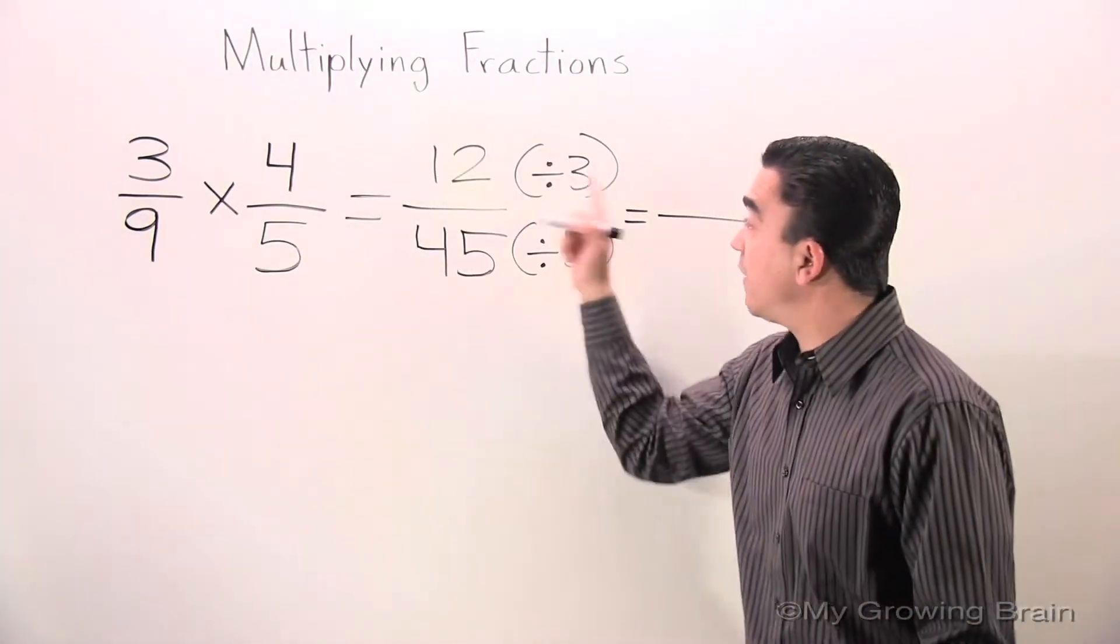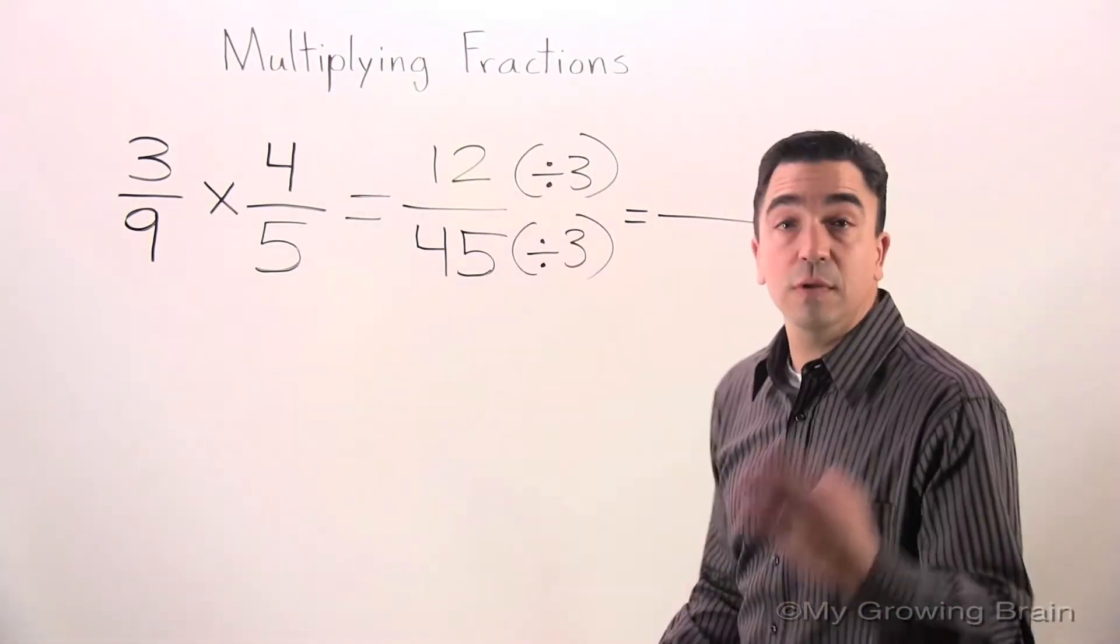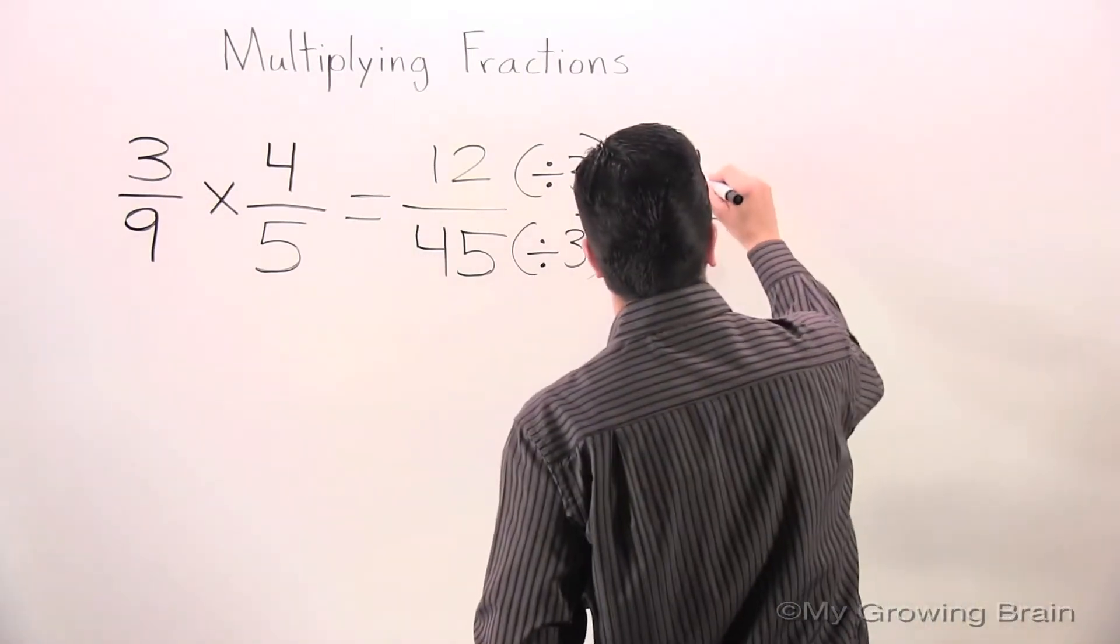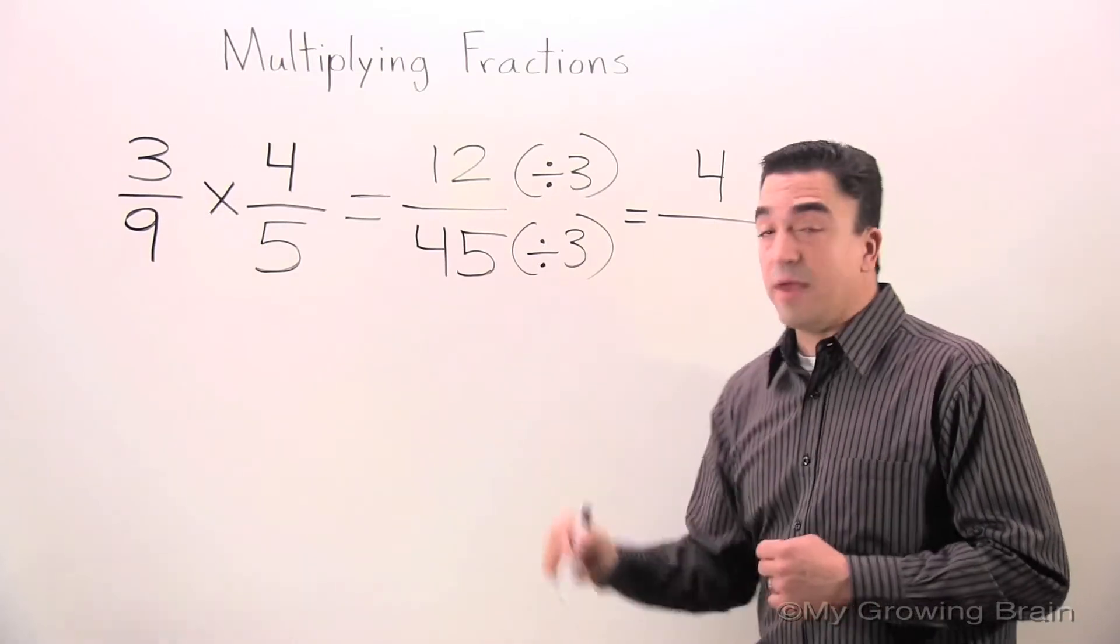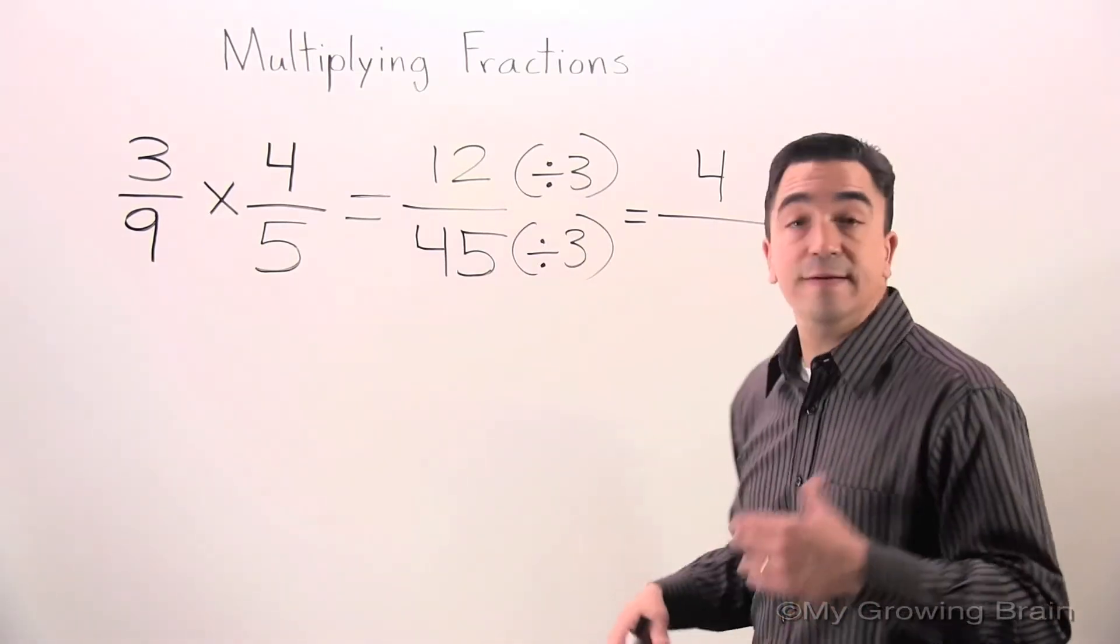12 divided by 3, 4. 45 divided by 3, 15.